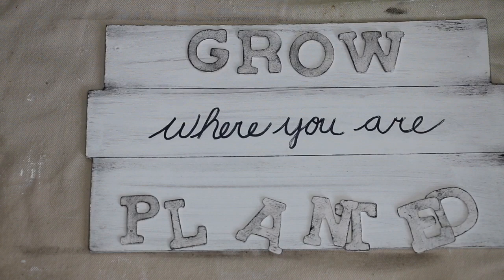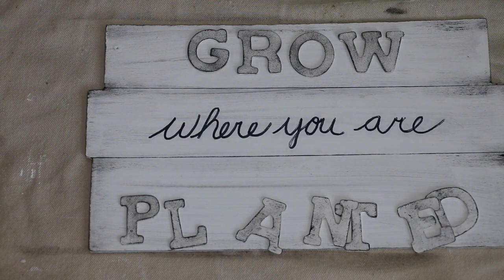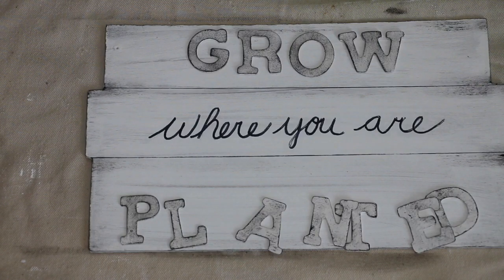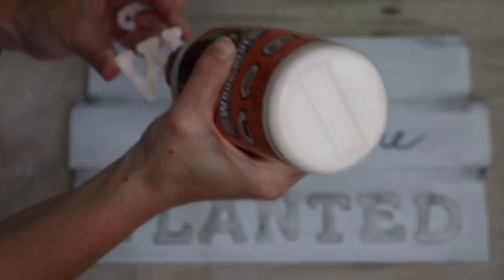I just took the black acrylic paint, I dabbed off as much of the acrylic paint as I could, and then took it along the edges. And then I also dabbed it all around the edges of the letters, allowing of course it to get into the center of it.